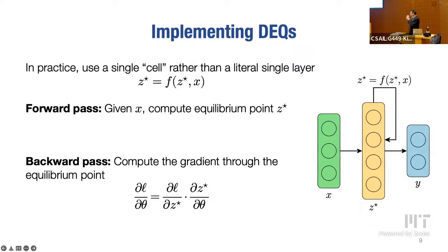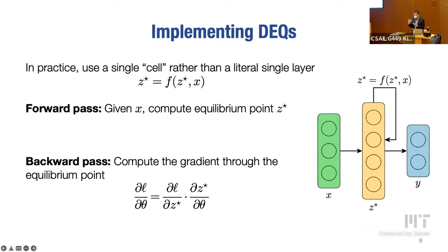The question is: are you effectively converting depth to width? Conceptually, yes — if you have a fixed parameter budget and transition from a very deep network to just one layer, you will have a wider layer by a square root factor of the depth. And practically speaking, it does seem like a slightly wider layer with repeated application captures a lot of the same representational power as depth.